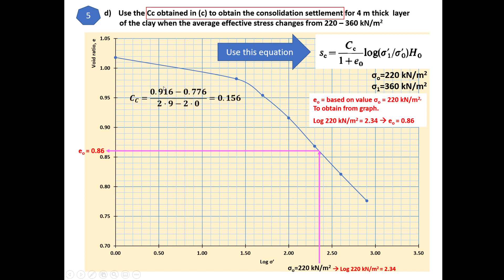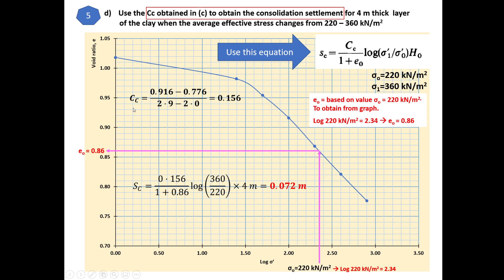Now we have all the values: Cc = 0.156, e₀ = 0.86, σ₀' = 220 kN/m², σ₁' = 360 kN/m², and H = 4 m. The consolidation settlement Sc = [Cc / (1 + e₀)] × log(σ₁' / σ₀') × H = [0.156 / (1 + 0.86)] × log(360/220) × 4 = 0.072 meters. This is how we obtain the consolidation settlement from the compression index using the e versus log stress curve.